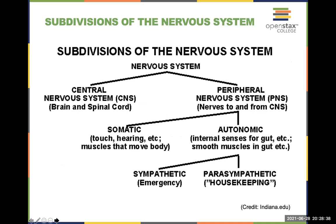Quick review of the nervous system subdivisions: the nervous system breaks into central and peripheral; peripheral breaks into somatic and autonomic; and autonomic breaks further into sympathetic and parasympathetic.